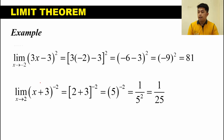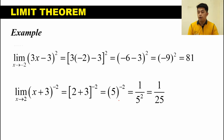Another example: the limit of quantity X plus 3 raised to the power of negative 2 as X approaches 2. This equals 2 plus 3 raised to the power of negative 2, which is 5 raised to the negative 2. Since the exponent is negative, we rewrite this as 1 over 5 squared by the law of exponents. So 1 over 25. Therefore, the limit of quantity X plus 3 raised to the power of negative 2 as X approaches 2 is equal to 1 over 25.